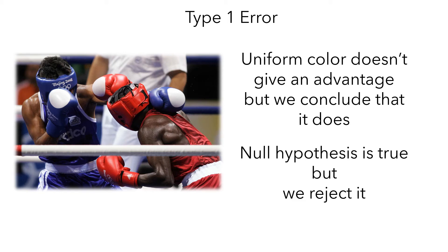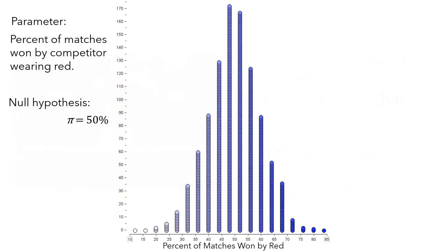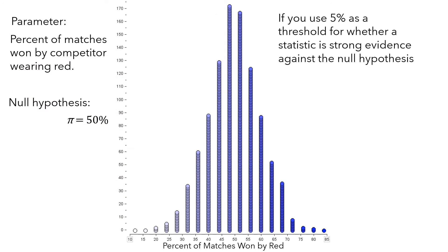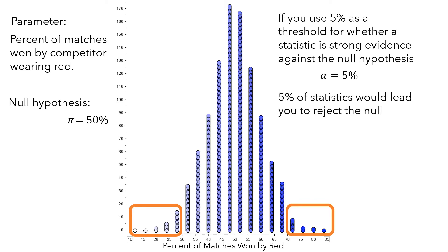Now, what is the chance that you would make a type 1 error? Let's look again at that sampling distribution. If you use 5% as a threshold for whether a statistic is strong evidence against the null hypothesis — another way to write this is alpha equals 5% — then any of these statistics would lead you to reject the null hypothesis. That is, 5% of statistics would lead you to reject it. In other words, there is a 5% probability that you would make a type 1 error.